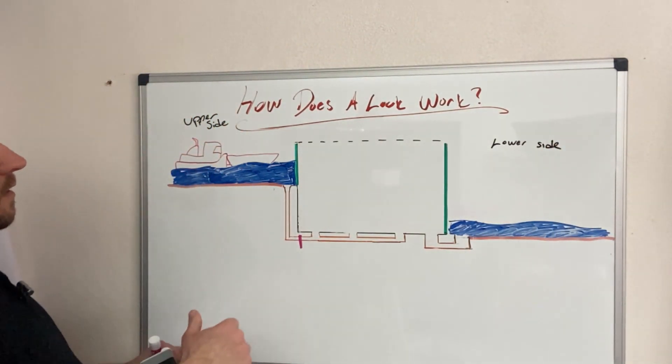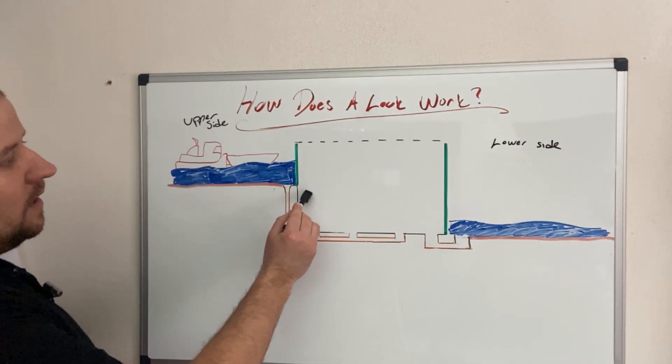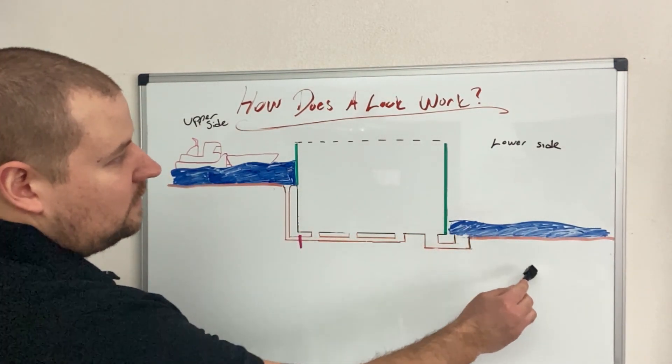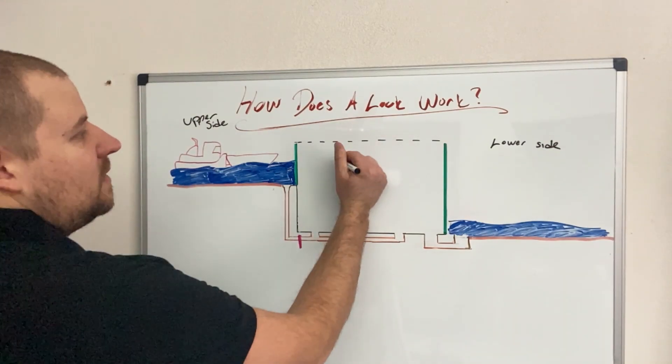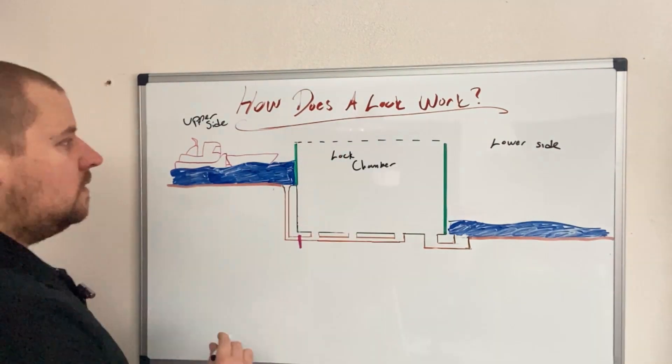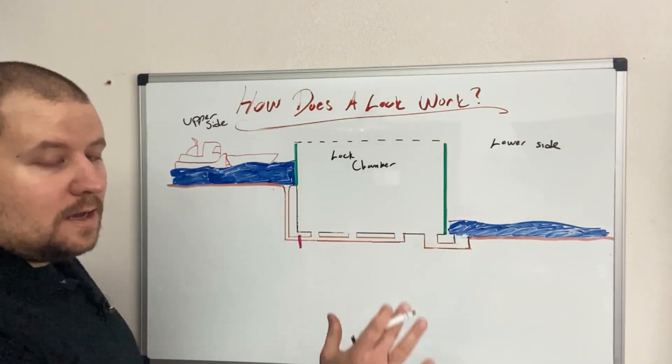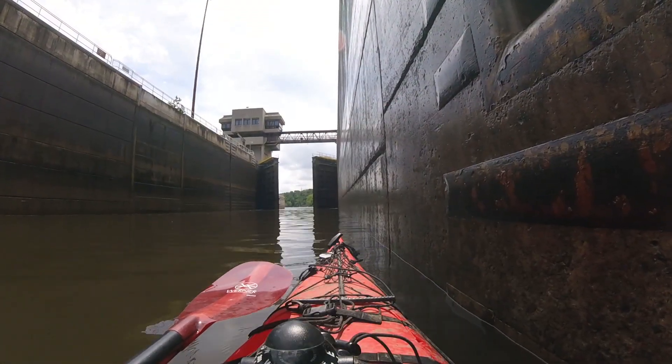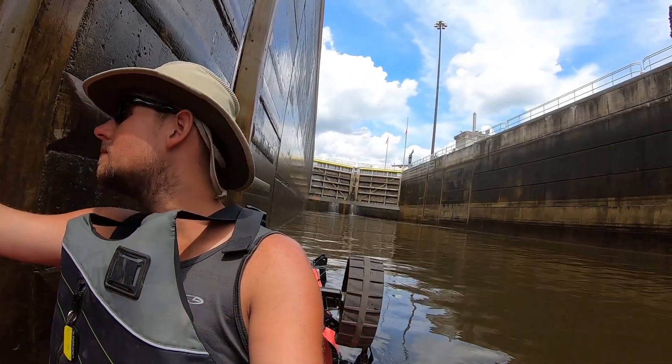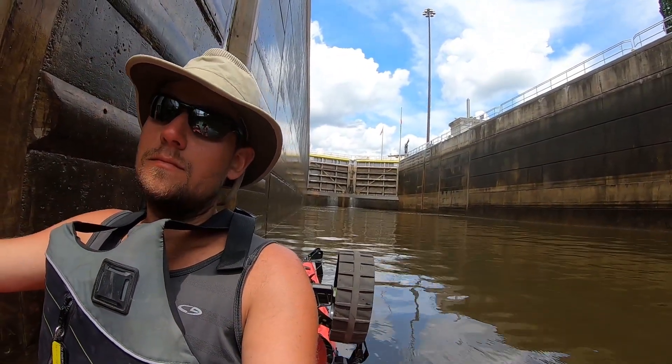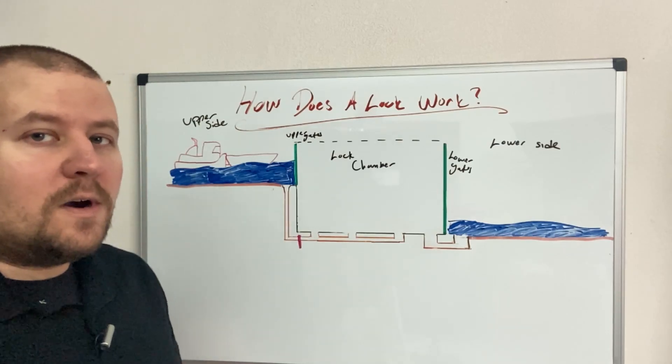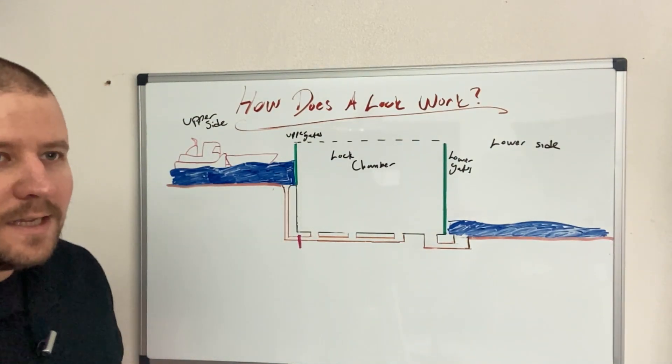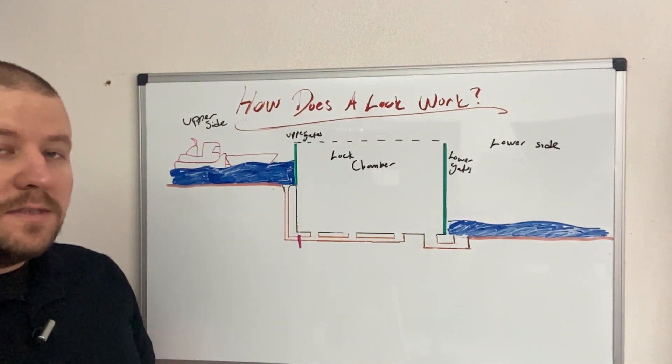This is generally ground. The ground generally follows a hill kind of down throughout the lock. This here would be the lock chamber. And then on each side of the lock, we have gates, so we have lower gates and upper gates. The upper and lower gates are responsible for keeping the water in and or out of the lock itself.